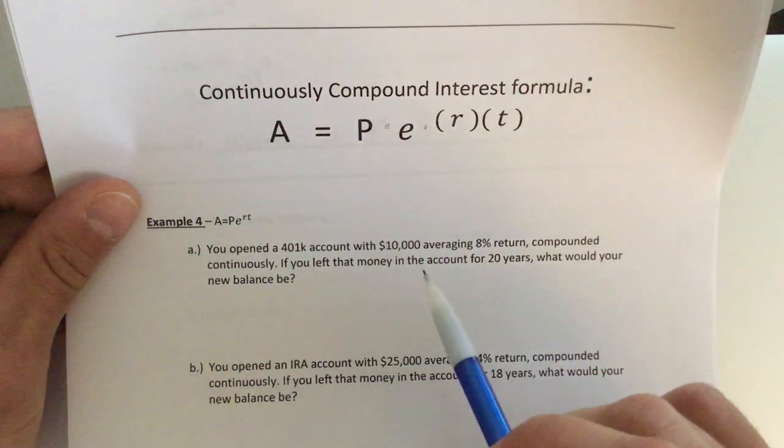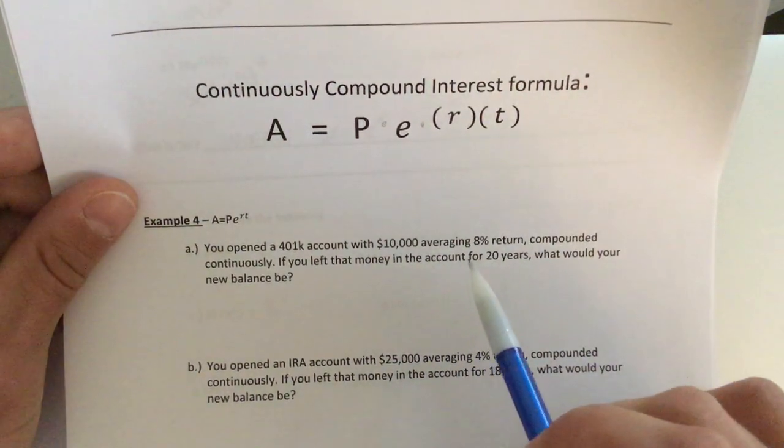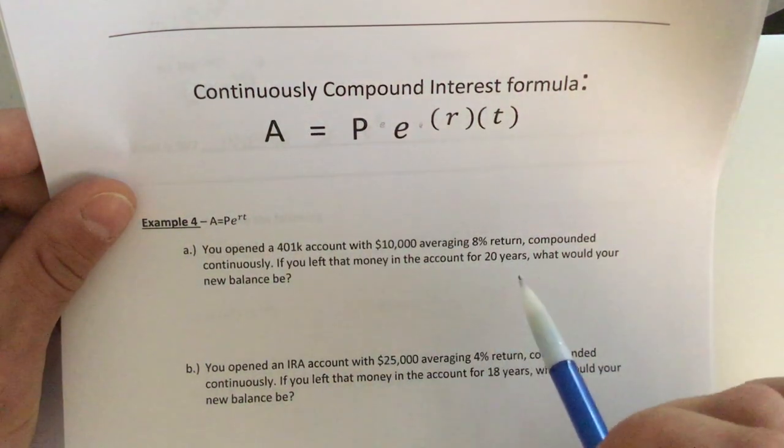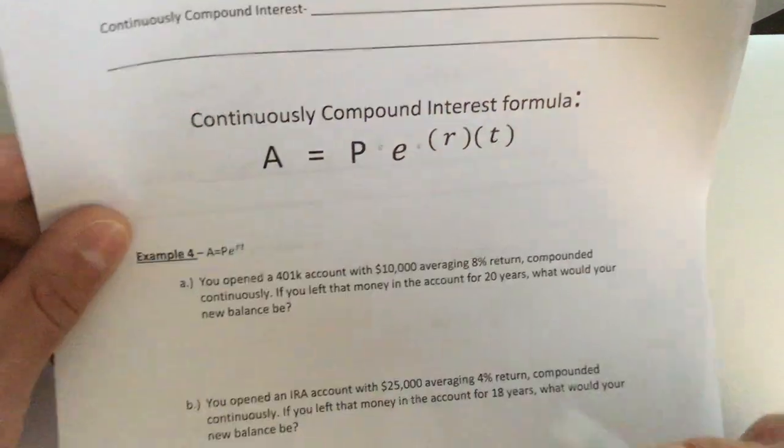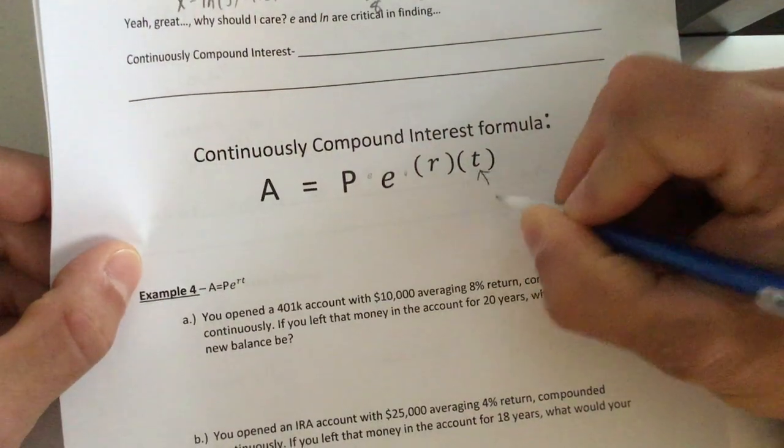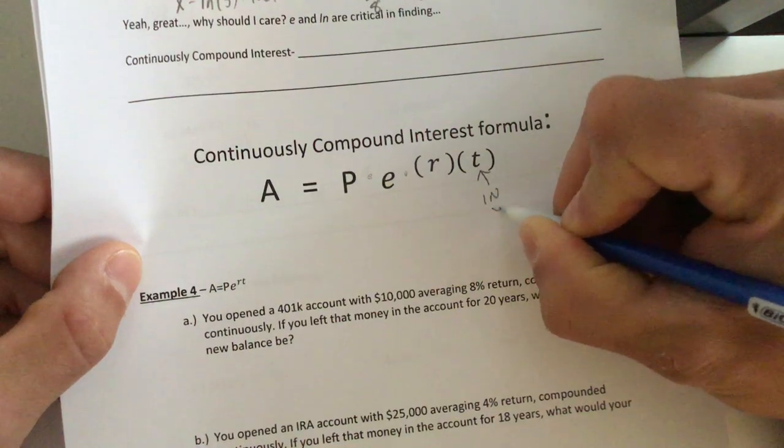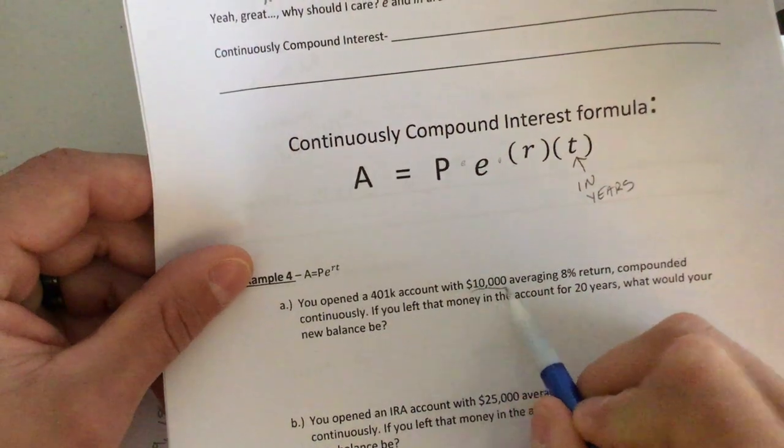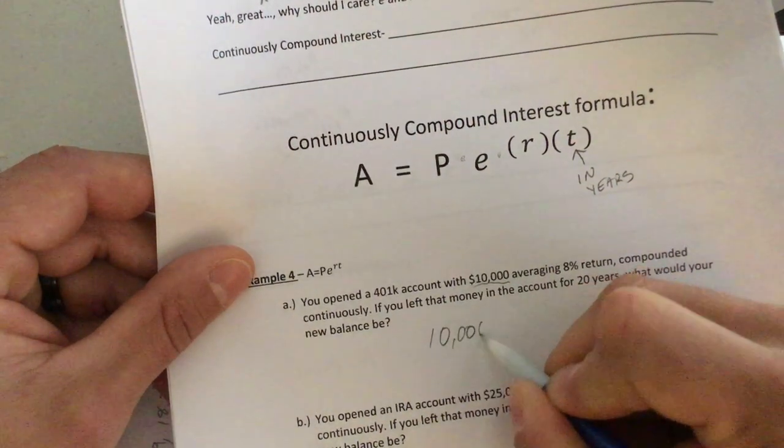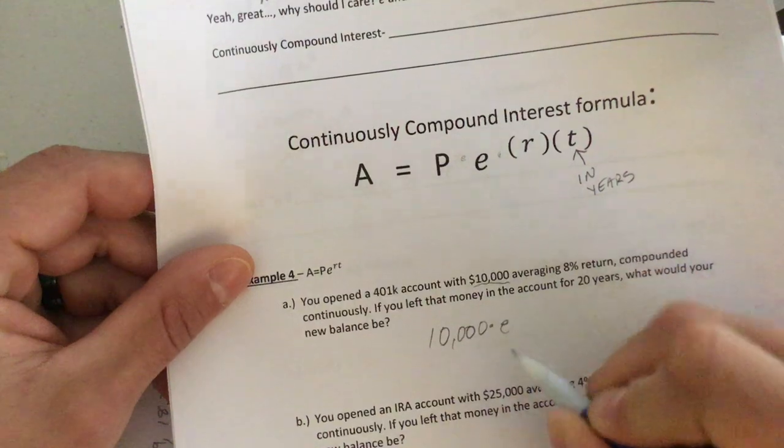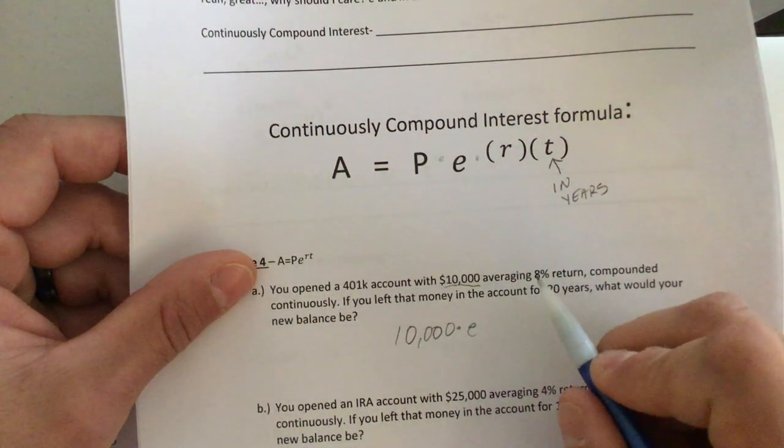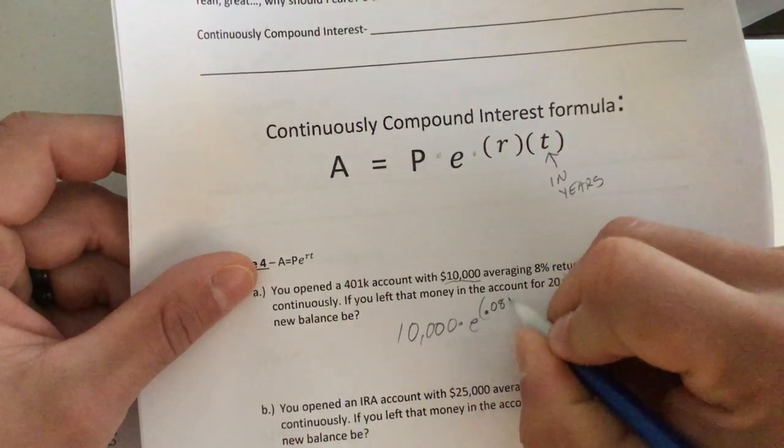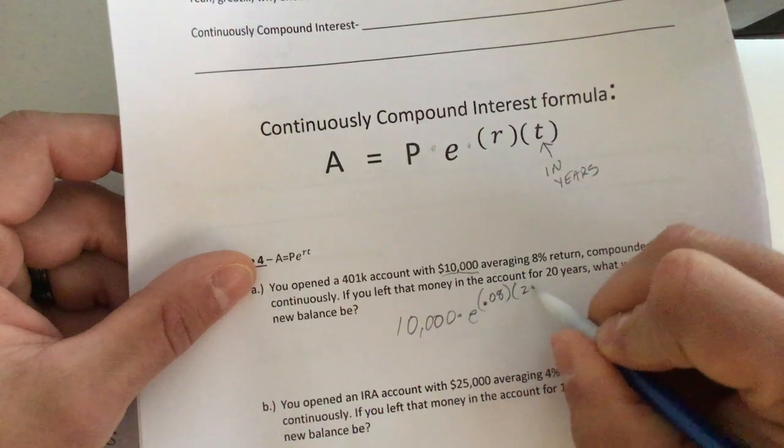Okay. So let's do this thing. You open a 401k with $10,000, averaging 8% return compounded continuously. If you left that money in the account for 20 years, what would your new balance be? Okay. Oh, one thing, that time, this must always be in years. Okay. So let's roll with this. We have our principal, which is $10,000 times E to the, our rate is 8% as a decimal. That's 0.08 times 20 years.